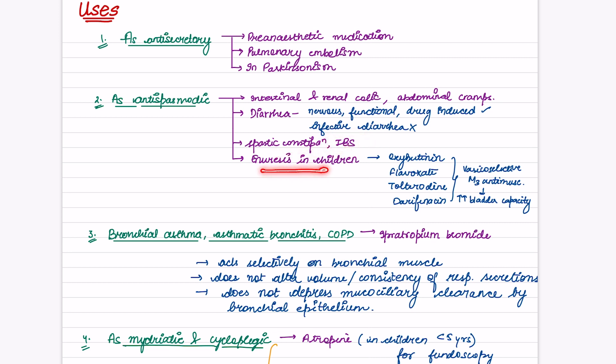For enuresis in children, which drugs act? Oxybutynin, flavoxate, tolterodine, and darifenacin. These are vesico-selective M3 antimuscarinic agents. They increase bladder capacity. For bronchial asthma, asthmatic bronchitis, and COPD, we use ipratropium bromide, which we already studied. It acts selectively on bronchial muscle, does not alter volume or consistency of secretions, and does not depress mucociliary clearance by bronchial epithelium.